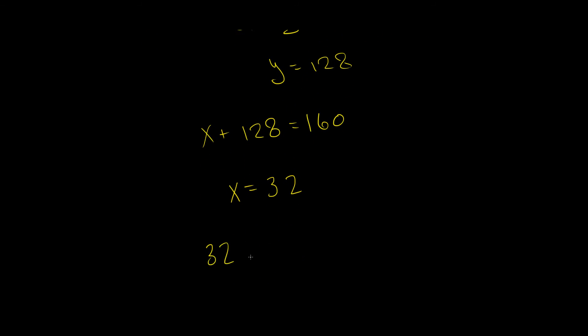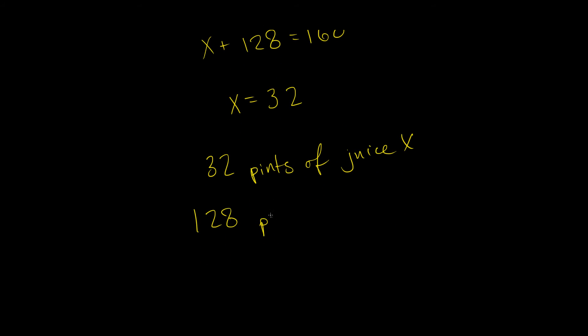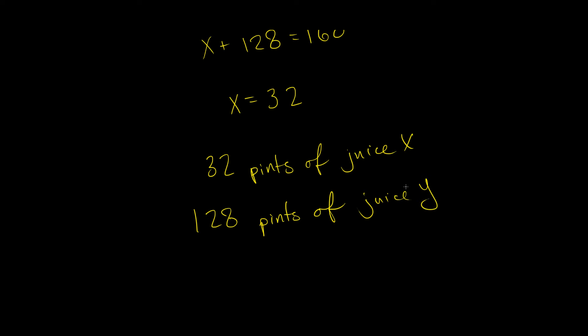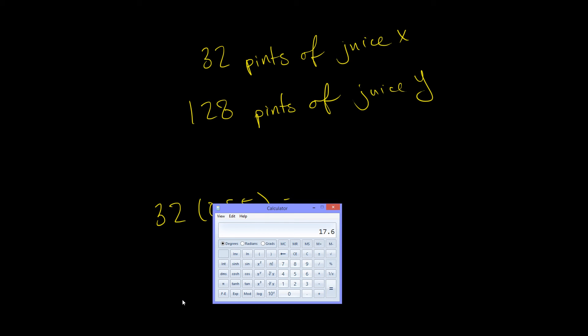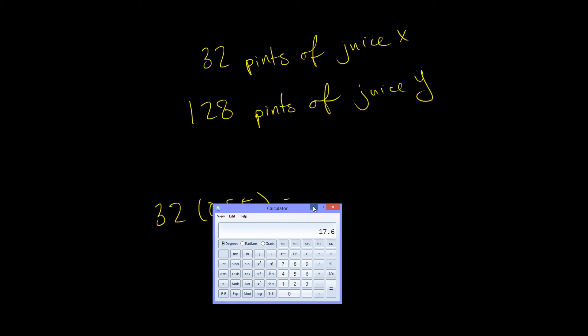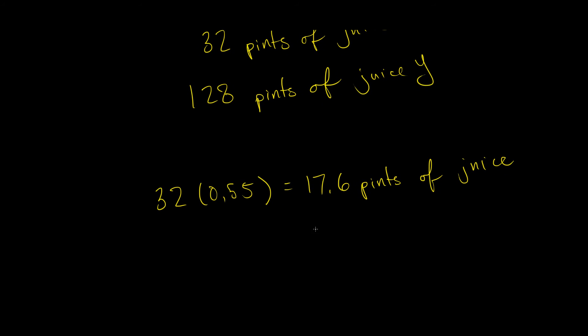We need 32 pints of juice X and then 128 pints of juice Y. And let's just double check that. So 32 pints of juice X, which is 0.55 or 55% real juice, gives us a total of 32 times 0.55 is 17.6 pints of juice.